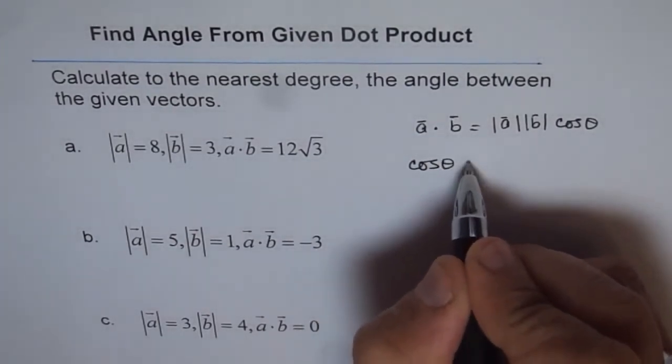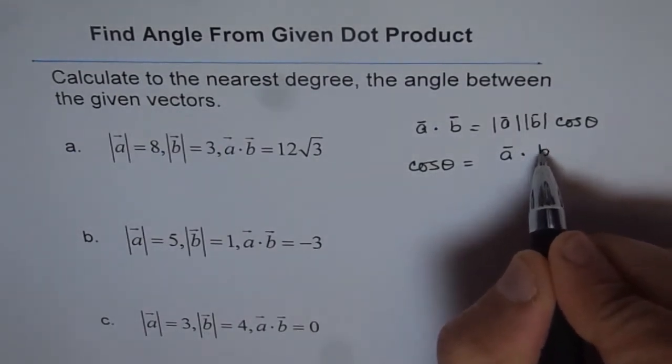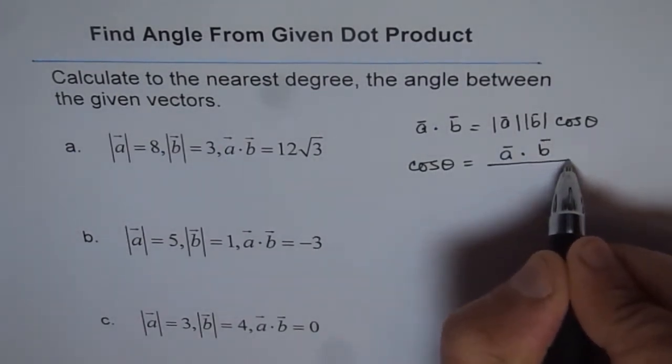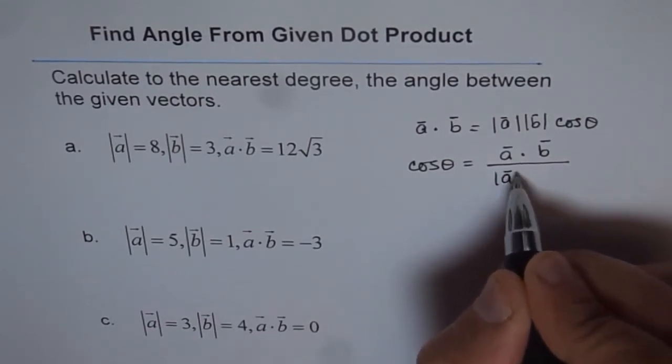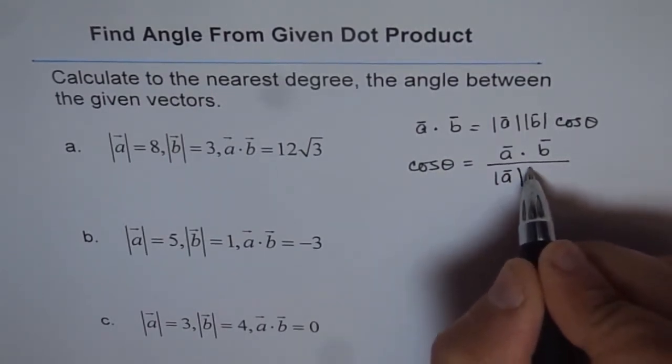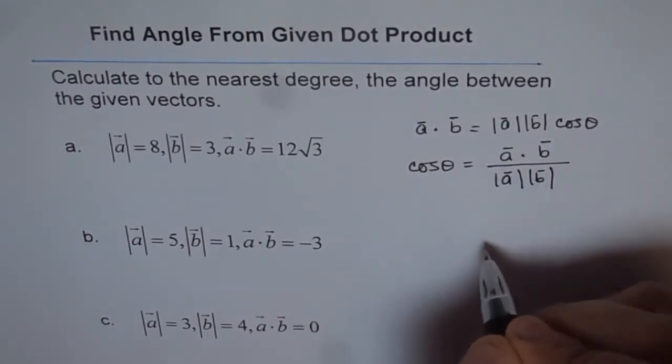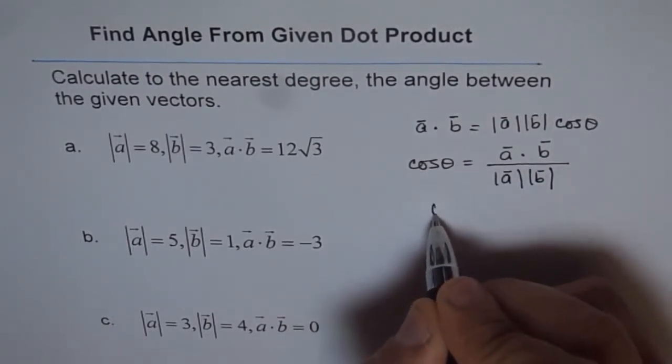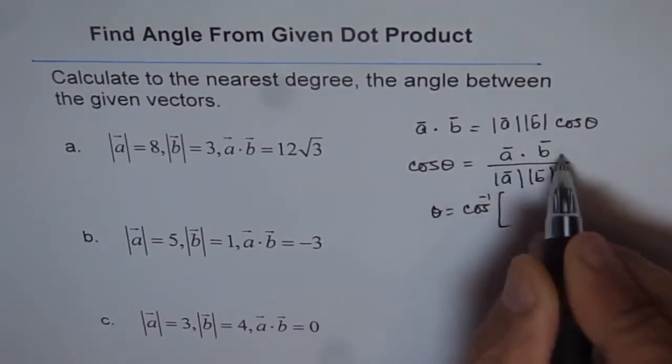Now, if we need to find theta, the angle between the two vectors, then we can rearrange this. We can write cos theta equals vector a dot vector b divided by magnitudes. That is magnitude of a times magnitude of b. That gives us cos theta.